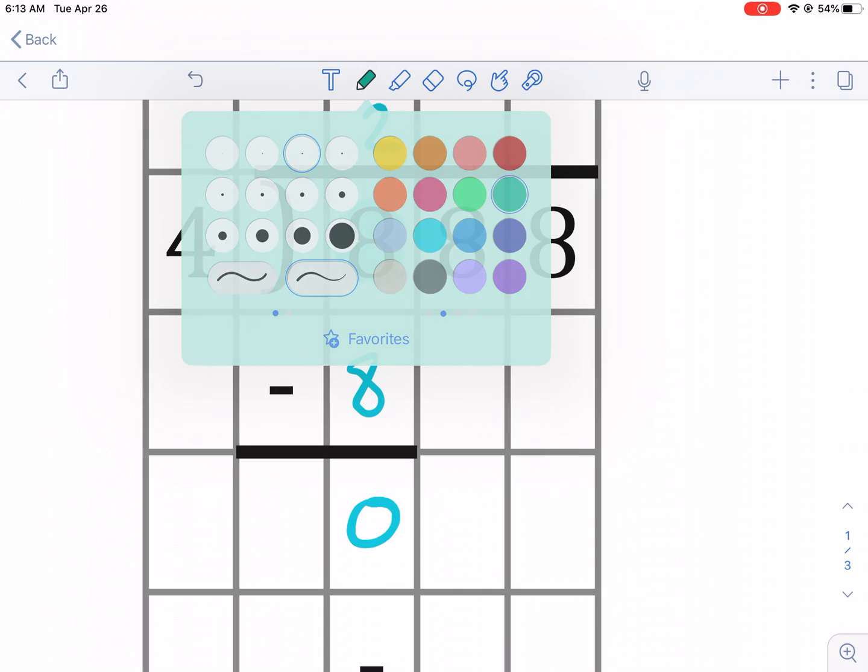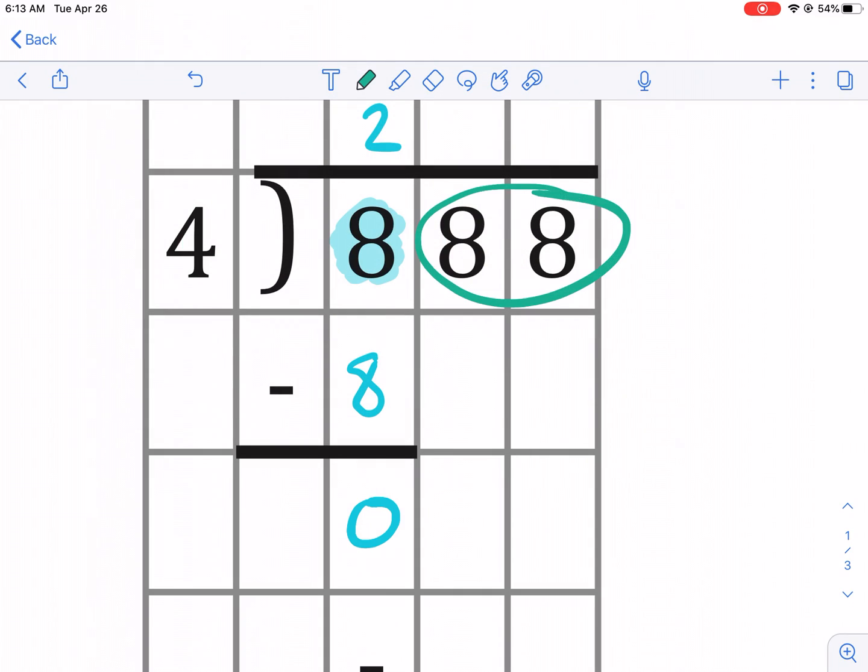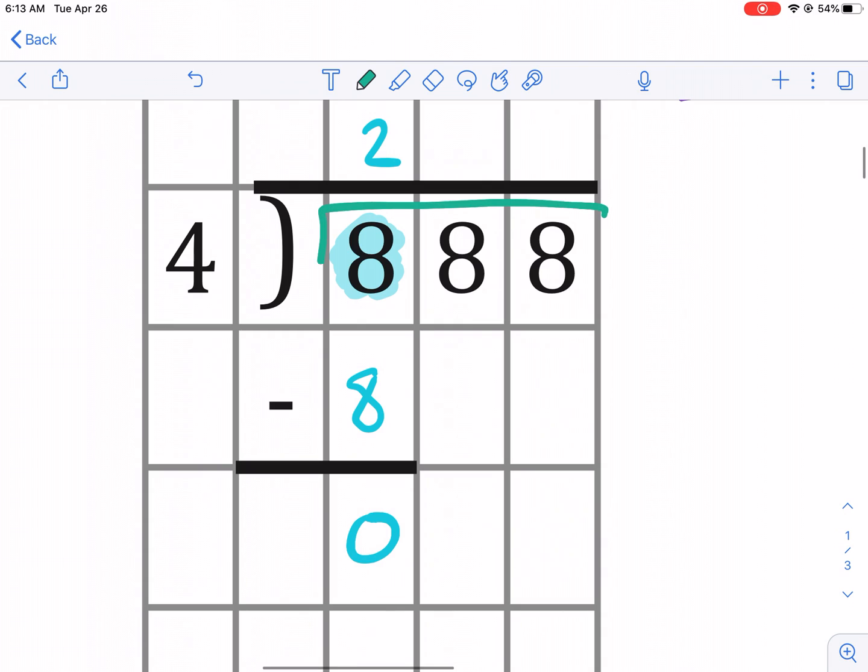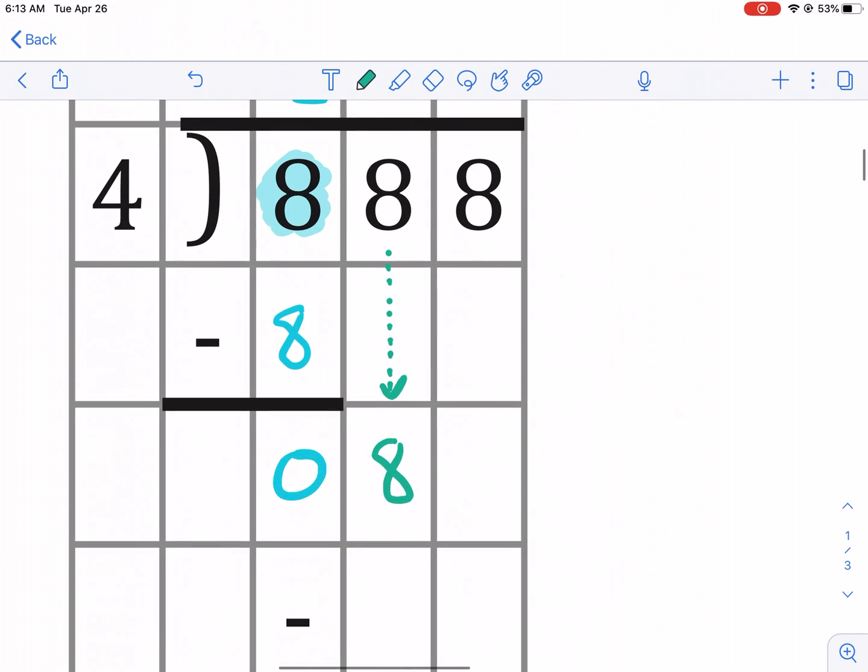So now we can just do 8 minus 8 as it's indicating right here and that gives 0. What's the next step? Well, the next step is, we have all these other digits. We know 4 goes into 8 2 times, but that's not the number. The whole number, the divisor is 888. So we still have to figure out some more digits here. So we're going to drop down this next digit.